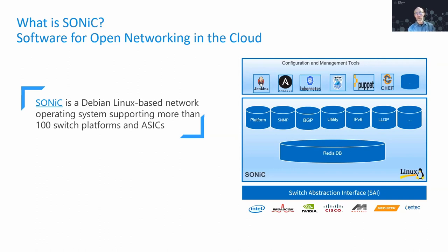SONiC is interesting in many ways. One of the first things is that it's broken out into multiple layers. SONiC is containerized — each piece of software that runs on it can be put in its own container, making it very easy to update SONiC and for network operators to choose what features and capabilities they want on their switches. Another unique thing about SONiC is the Switch Abstraction Interface, or SAI, at the bottom. Many vendors across the industry have built SDKs so that many different switch ASICs can support SONiC. Today, there are over a hundred switch platforms running SONiC successfully in production across the world.